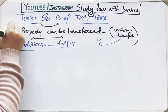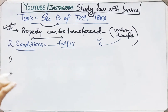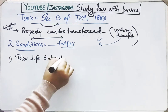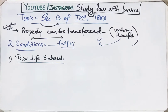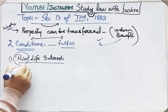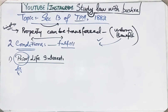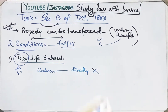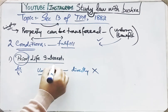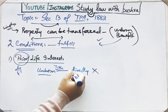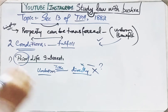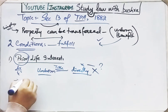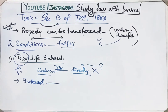Let us discuss Section 13 simply, away from the bare-act language, though the meaning is the same. The first condition is prior life interest. The word 'prior' is always used for something that comes before — before anything else. We know an unborn person has no existence. We cannot directly transfer property because if we even try, in whose name will the title be?